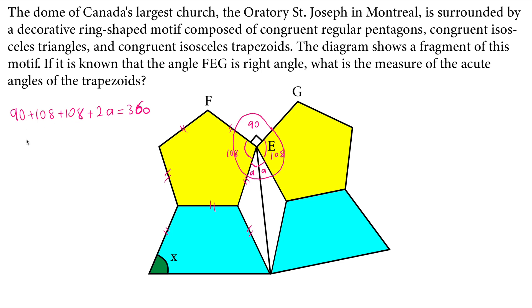That's 306 plus 2A equals 360. Subtract 306 from both sides. This will cancel. 2A equals 54 and A equals 27.